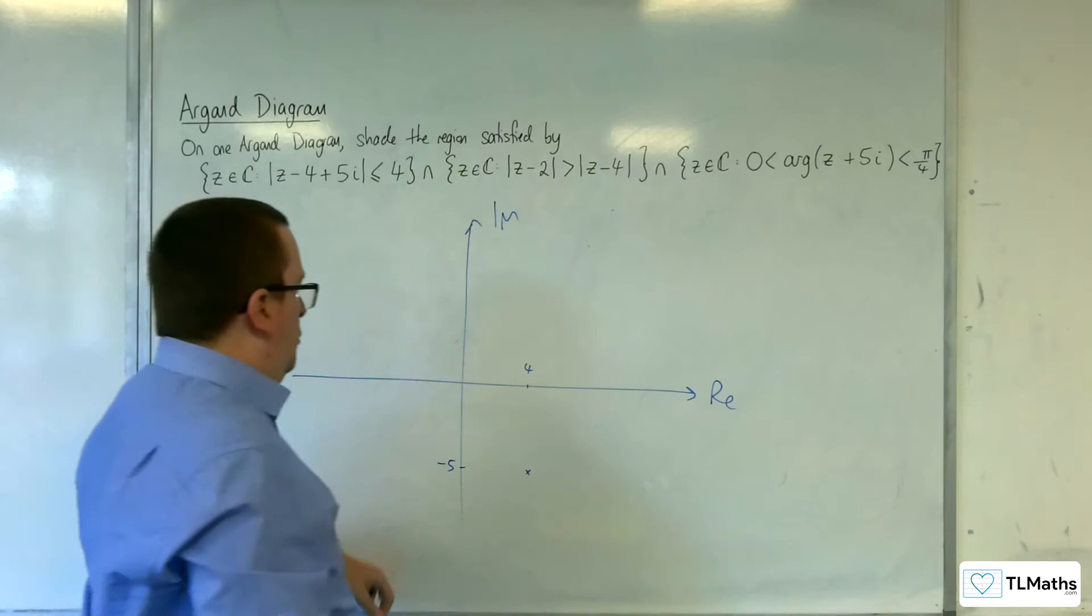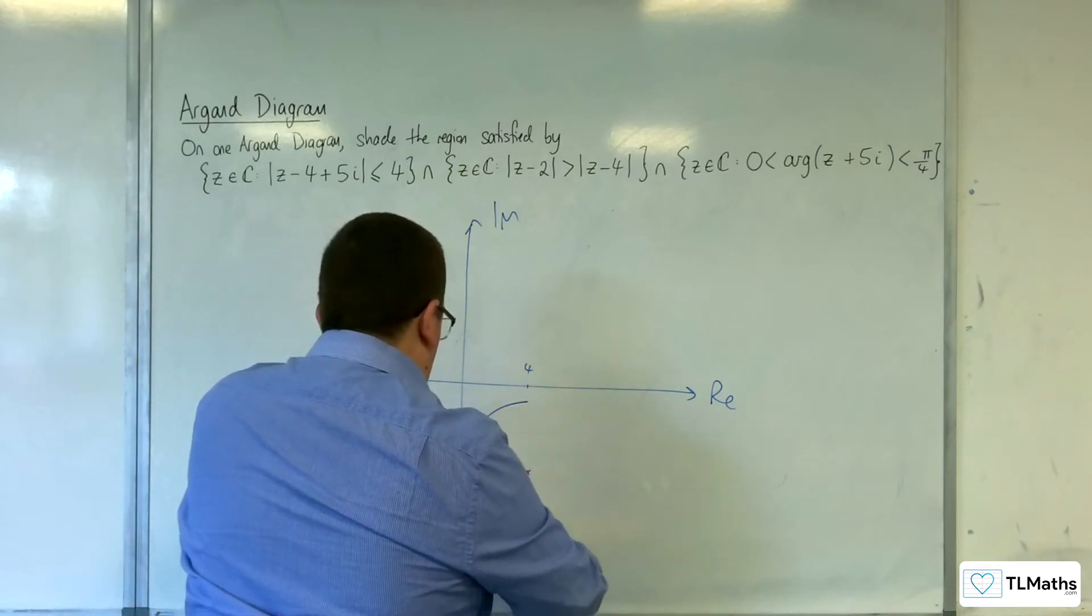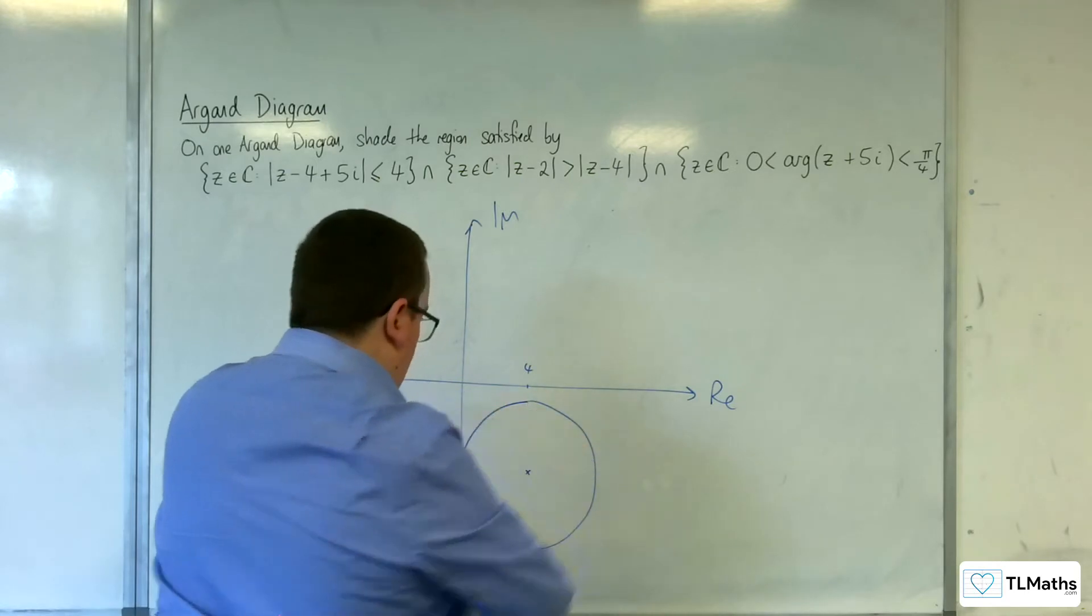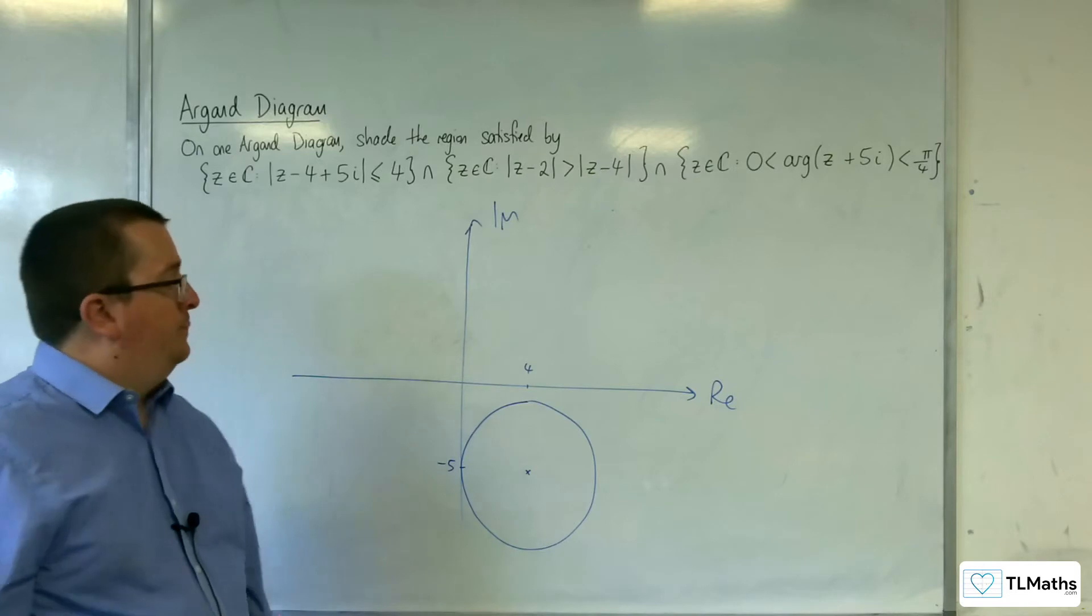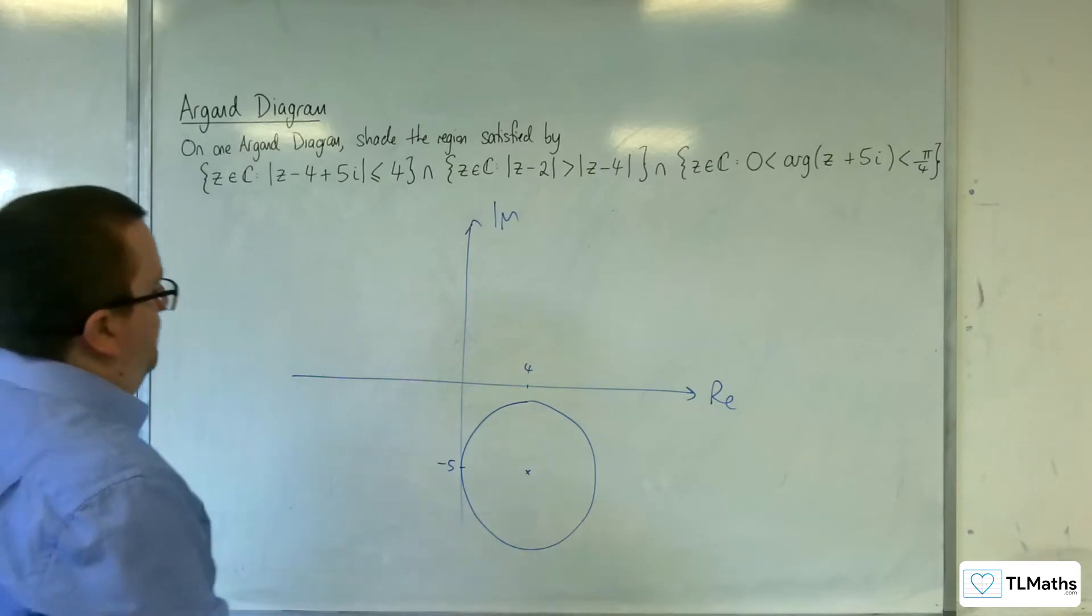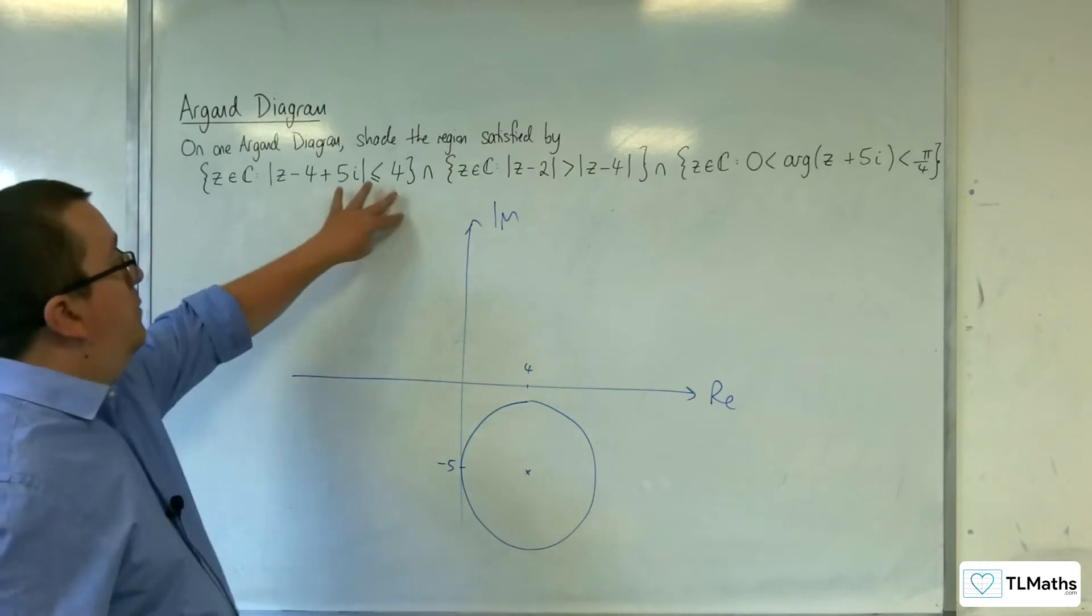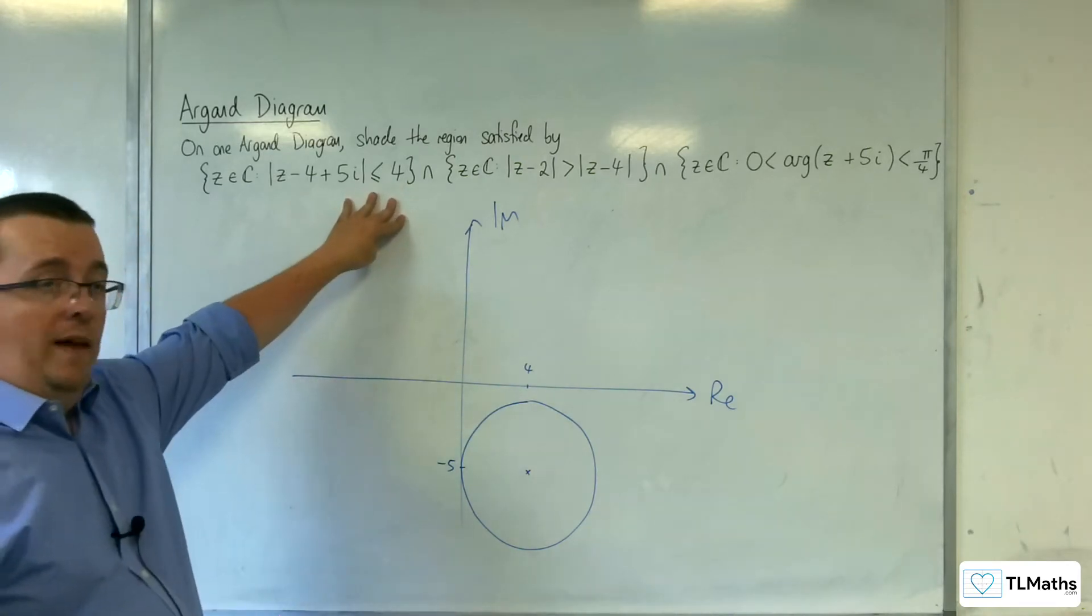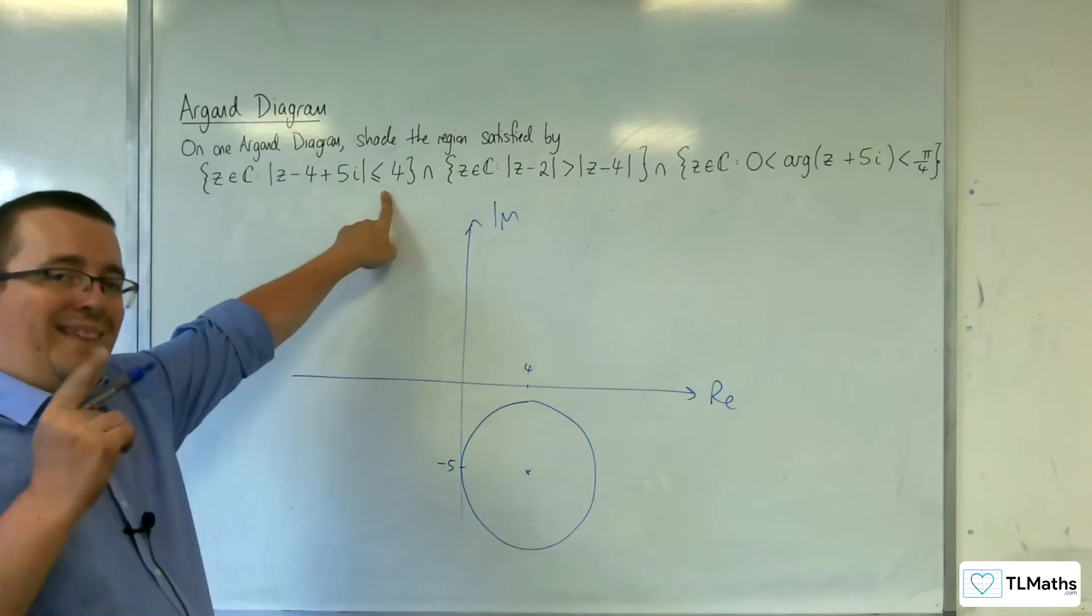It's got a radius of 4. So that means that we're going to be having the imaginary axis as a tangent. So it's going to look like that. And, of course, it's not going to touch the real axis. So that's the first bit, and we're going to be wanting the interior of that. And we're using a solid curve because it's less than or equal to. That's the first bit.